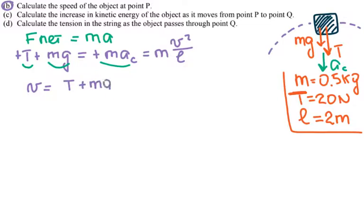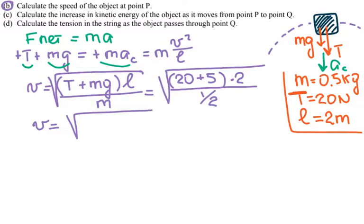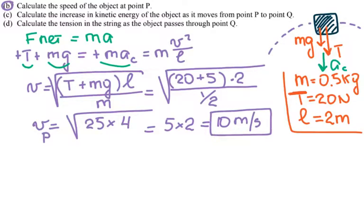So your velocity is equal to the square root of T plus mg times L divided by M. So we have the square root of T is 20, mg is 5, the string is 2, and M is 0.5 which is one half. So the velocity is equal to the square root, this one has 25, and divide by one half is the same times by 2, so I can just write 4 instead of 2. So it's 5 times 2 which is 10 meters per second.